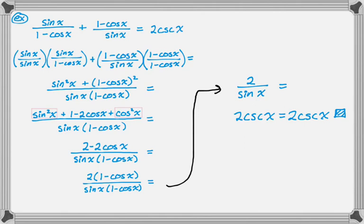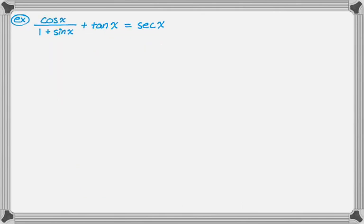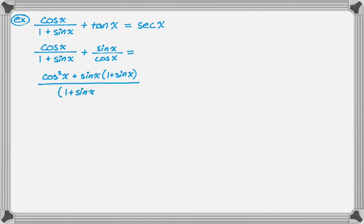I'm going to do one more example: cosine over one plus sine plus tangent is equal to secant. Again the left hand side looks more complicated, so I'm going to work on that. There's nothing really obvious to do. I see one fraction, it'd be nice if I had two, so I'm going to use the ratio identity on tangent to rewrite it as sine over cosine. Now I have two fractions, the only thing I can think to do is to add them, so I need a common denominator. I'm going to multiply the first fraction by cosine over cosine, the second fraction by one plus sine over one plus sine. This one I'm showing more what I would actually do, I'm not showing all the steps.